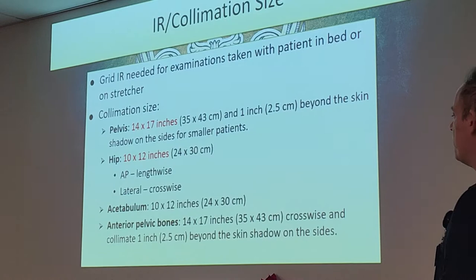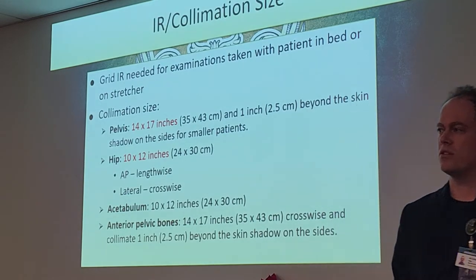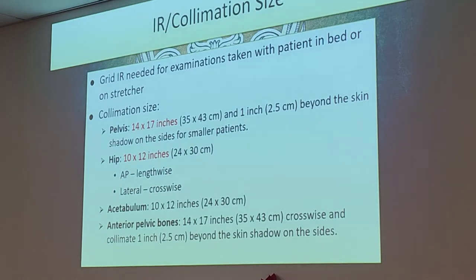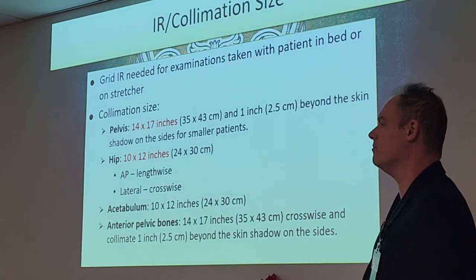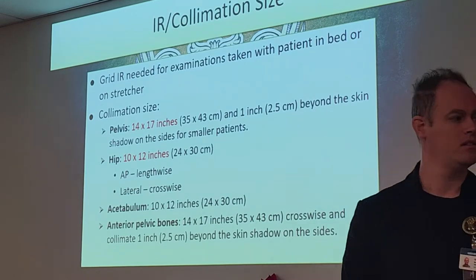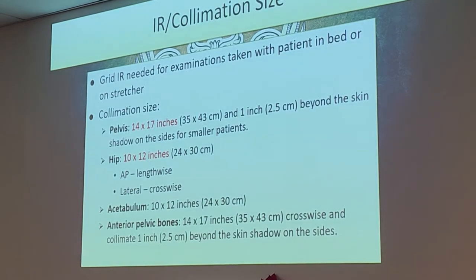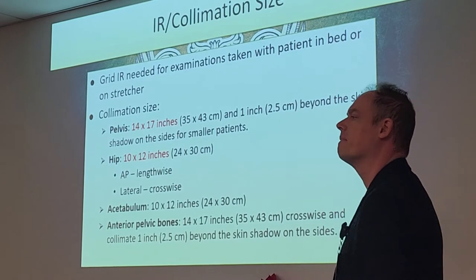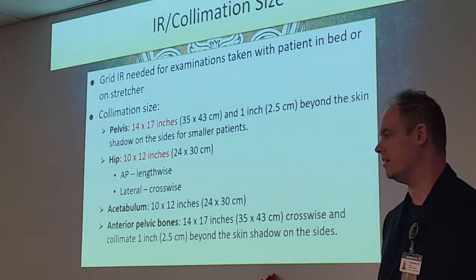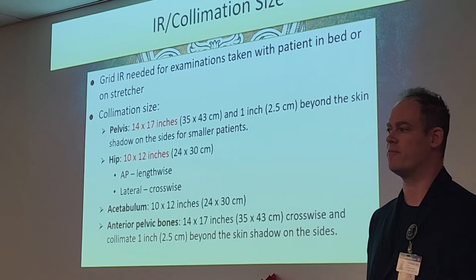For the acetabulum, we do Judet views — a French word — using 10x12 cassettes. For the interior pelvic bones, we have inlet and outlet views using 14x17s, crosswise on both. Those are our specialized views.